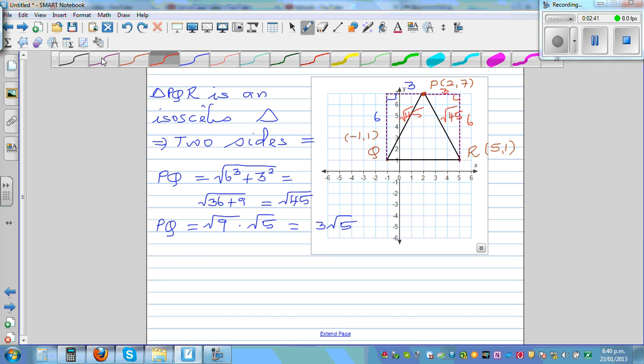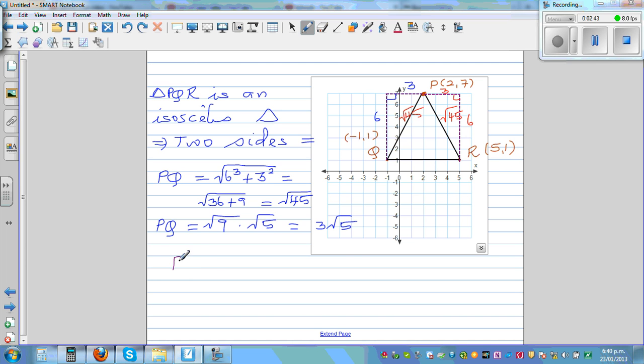So you can say PQ is equal to PR. This tells me this is an isosceles triangle. What's the length of QR? This is very easy. The distance from Q to R is 1, 2, 3, 4, 5, 6. These two sides, PQ equals PR, so it's an isosceles triangle.